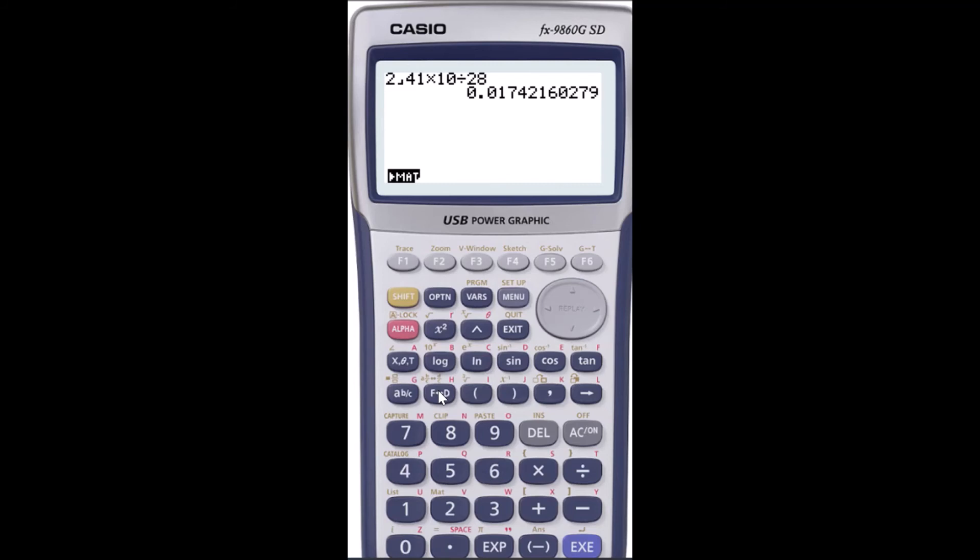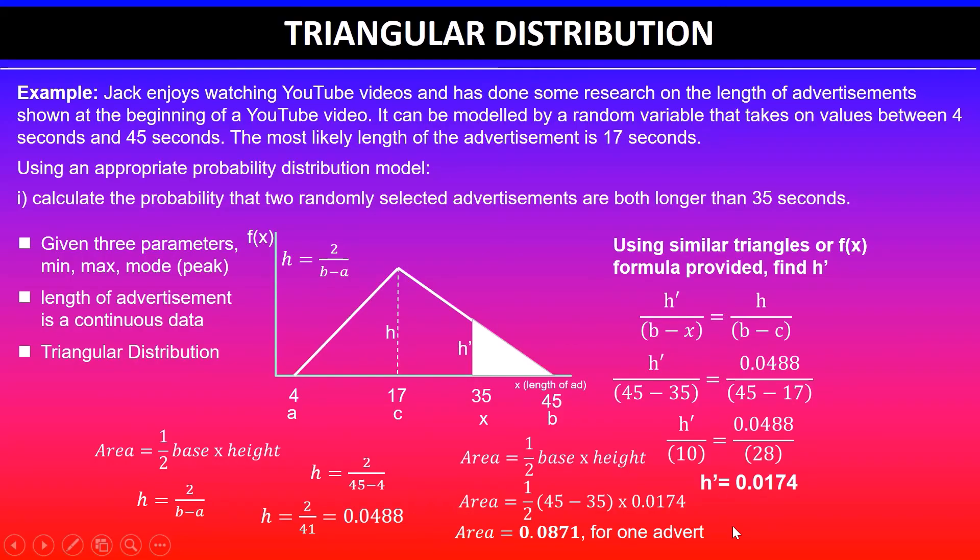If I go half the base times height, the base was 10 for the triangle that we are after between 35 and 45. Half of that is 5, so if I multiply this by 5 I will get the area which is 25 over 287, and in decimals it's 0.0871.